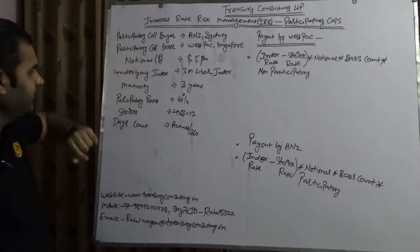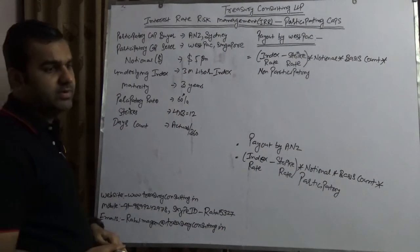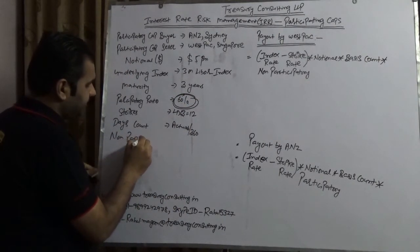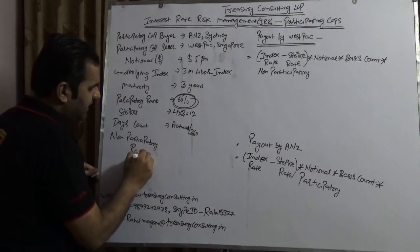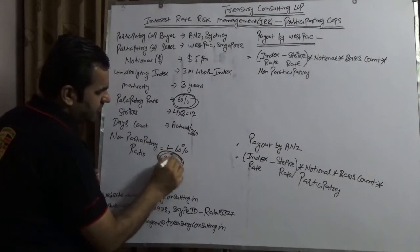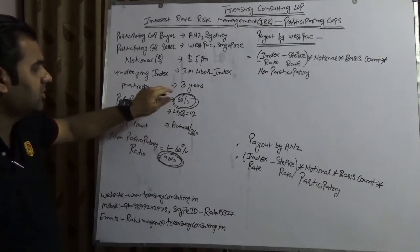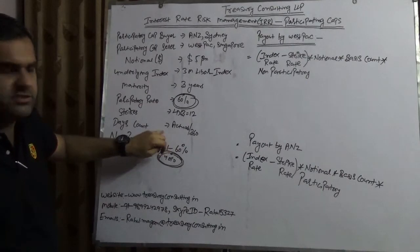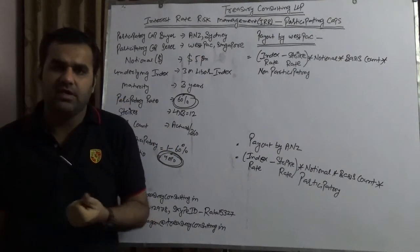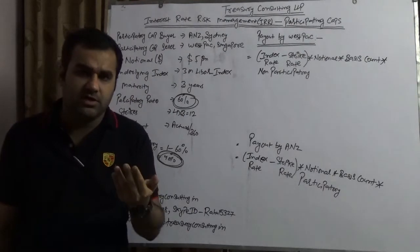The underlying is kept at three months because we have not complicated it by adding an ICAP adjustment. Maturity is three years. The participation ratio is sixty percent — note this very carefully. This is very important because if the participation ratio is sixty percent, it means the non-participatory ratio is 1 minus 60%, which equals 40%. Total number of strikes is twelve because every year has four quarters and we are talking about three years. The day count convention is actual over 360, and the difference is assumed to be 91 days.